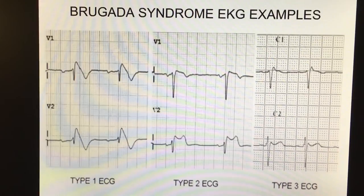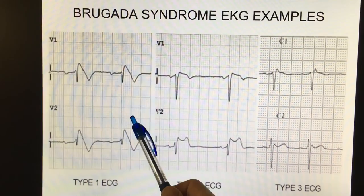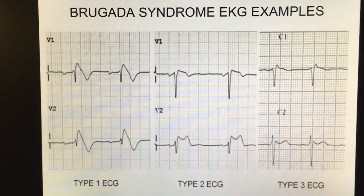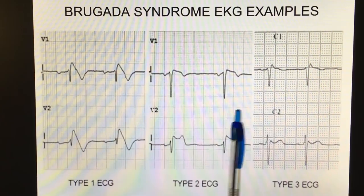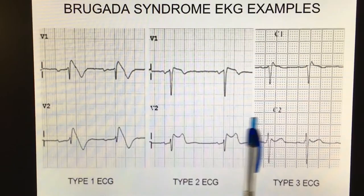Now we're going to talk about Brugada syndrome. This is one of those really scary causes of syncope. As you can see, there are three types. Type 1 is the one you need to burn into your cortex, because that EKG is a slam dunk for Brugada syndrome. Types 2 and 3 are actually not diagnostic.